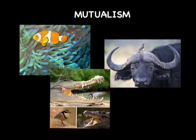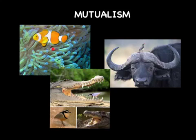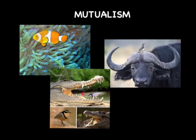Three examples of mutualism are shown here. The clownfish and anemone: the clownfish gets a home and protection, while the anemone is protected from predators the clownfish drives away. A bird and a water buffalo: the bird benefits by eating parasites off the buffalo, and the buffalo gets cleaned. Similarly, a bird and a crocodile: the bird gets food from the crocodile's mouth, and the crocodile gets a dental cleaning.